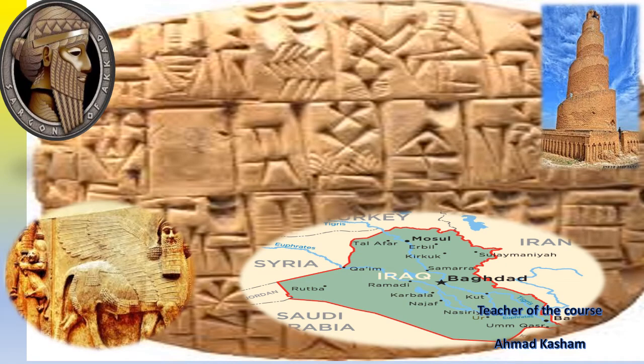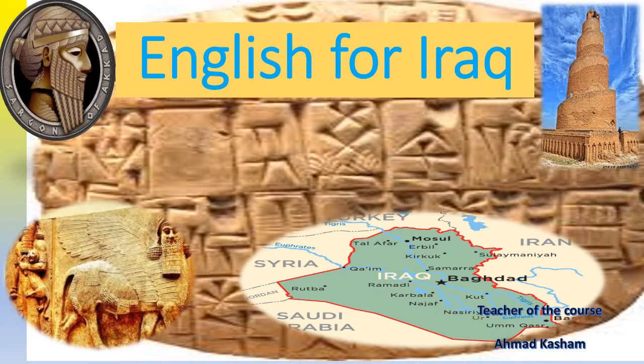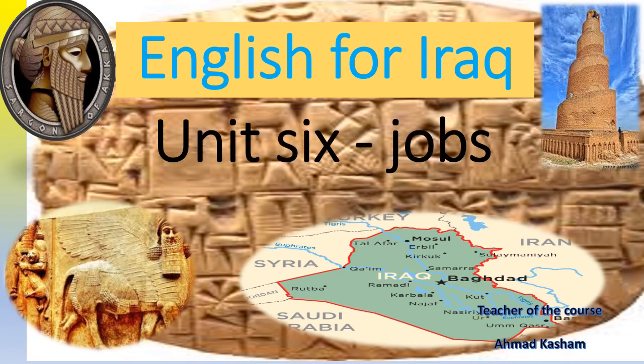Bismillah ar-Rahman ar-Rahim. Hello my students and welcome again and again to English for Iraq. Today we are still in Unit 6 about jobs, but we will study something different. We will be reading, listening and answering some questions about the story of Boba and Basim. In each unit, we study or learn about a new episode. Today we will be reading about Boba and Basim when they go to the basketball court. Let's start.